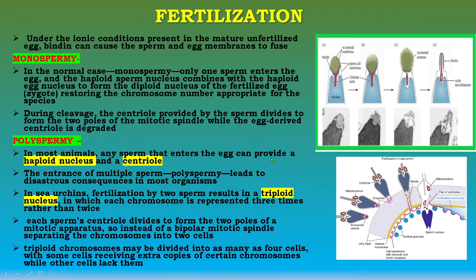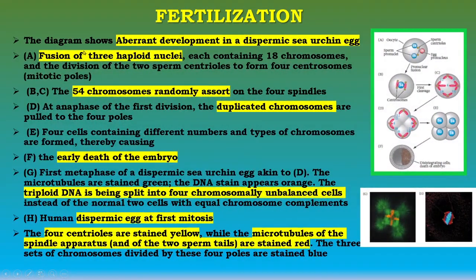In most animals, any sperm that enters the egg can provide a haploid nucleus and a centriole. The entrance of multiple sperm — polyspermy — leads to disastrous consequences in most organisms. In sea urchin, fertilization by two sperm results in a triploid nucleus where each chromosome is represented three times. Each sperm centriole divides to form two poles of a mitotic apparatus, so instead of a bipolar mitotic spindle separating chromosomes into two cells, the triploid chromosomes may be divided into as many as four cells — some receiving extra copies of certain chromosomes while others lack them.